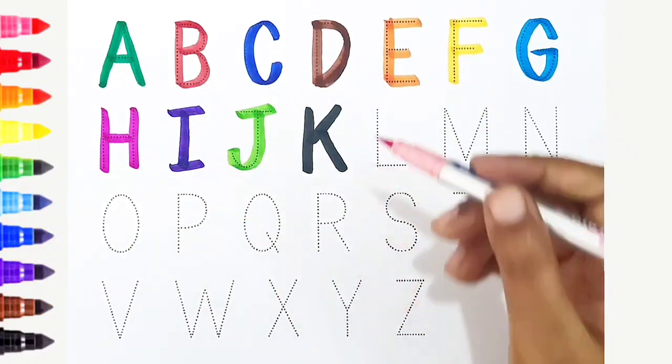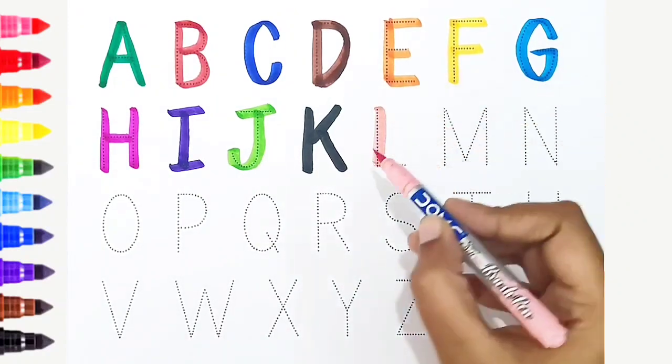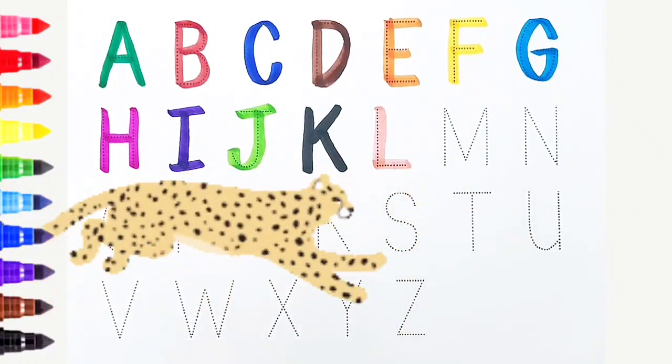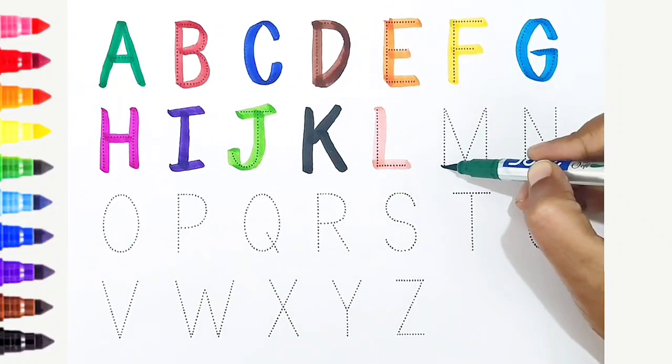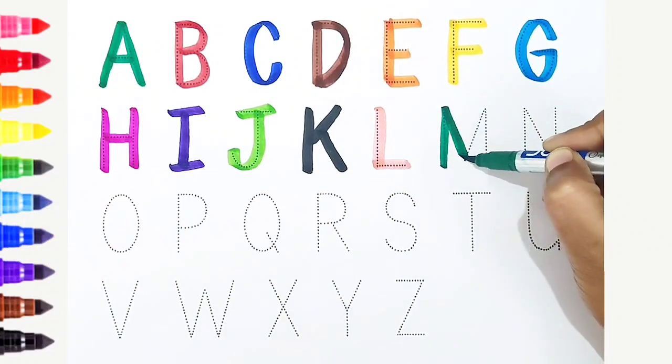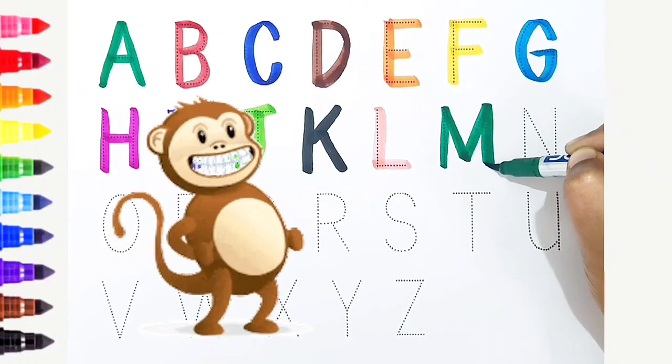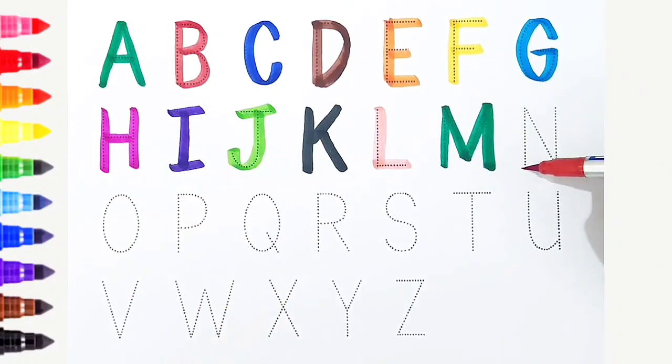L, light pink color, L is for leopard. M, dark green color, M is for monkey. N, red color, N is for nest.